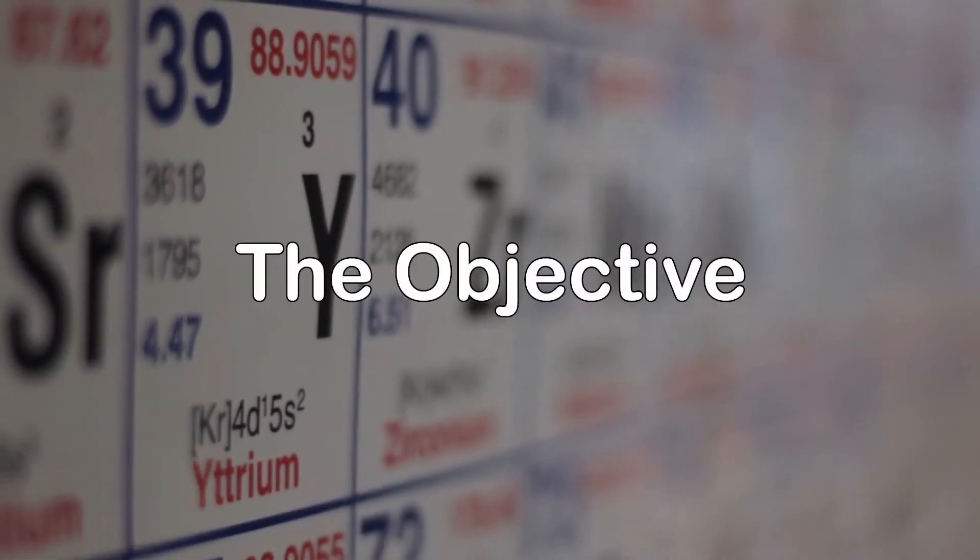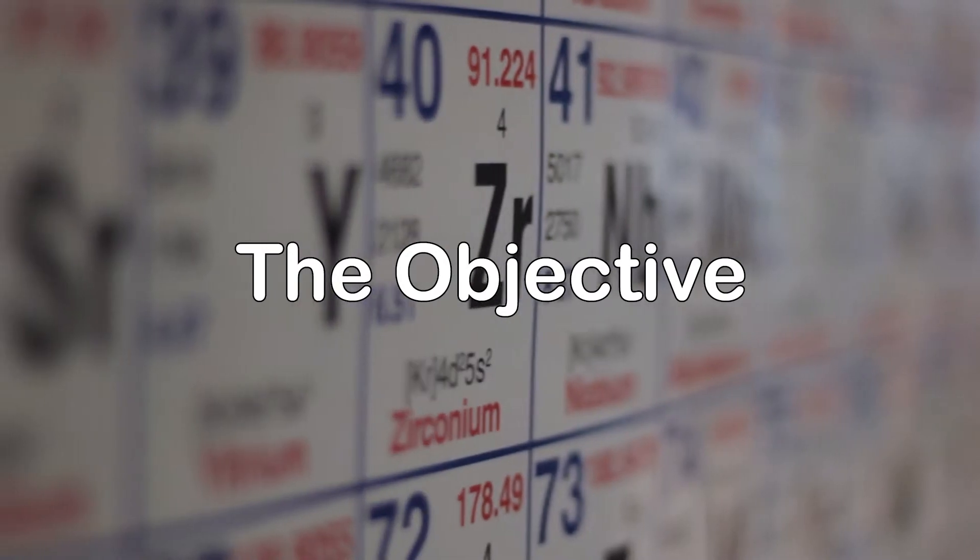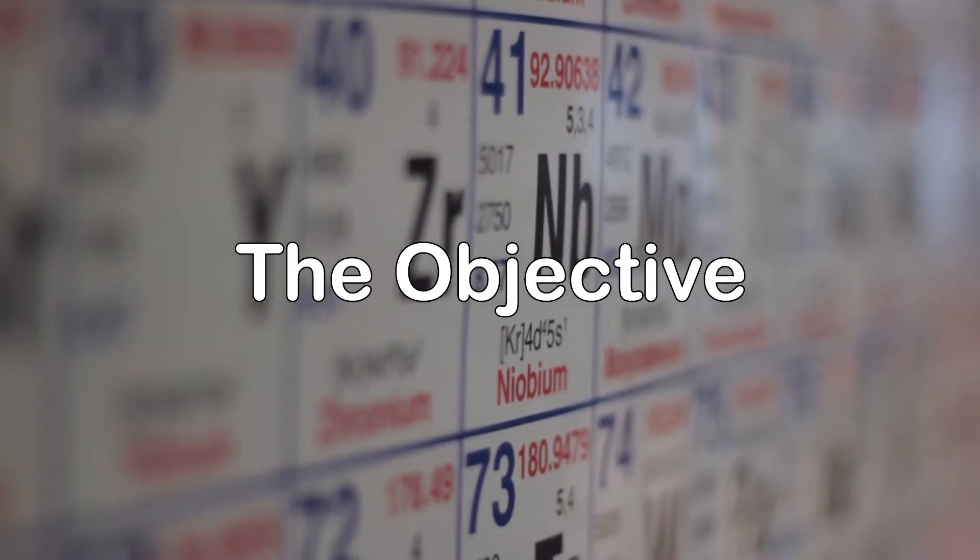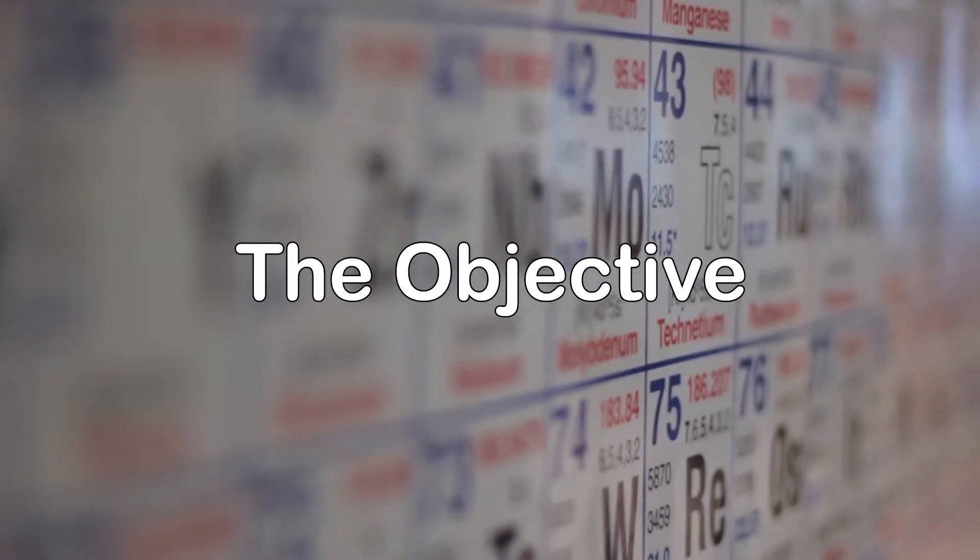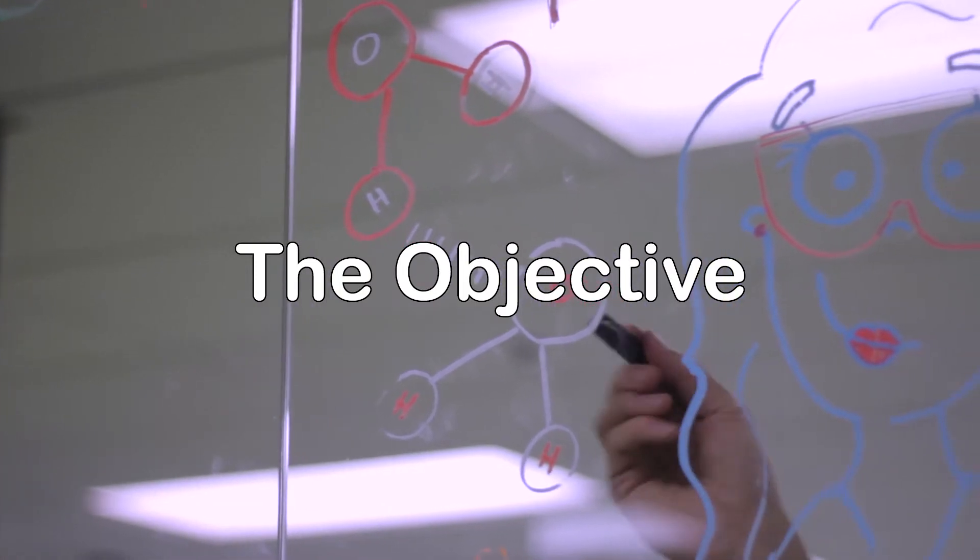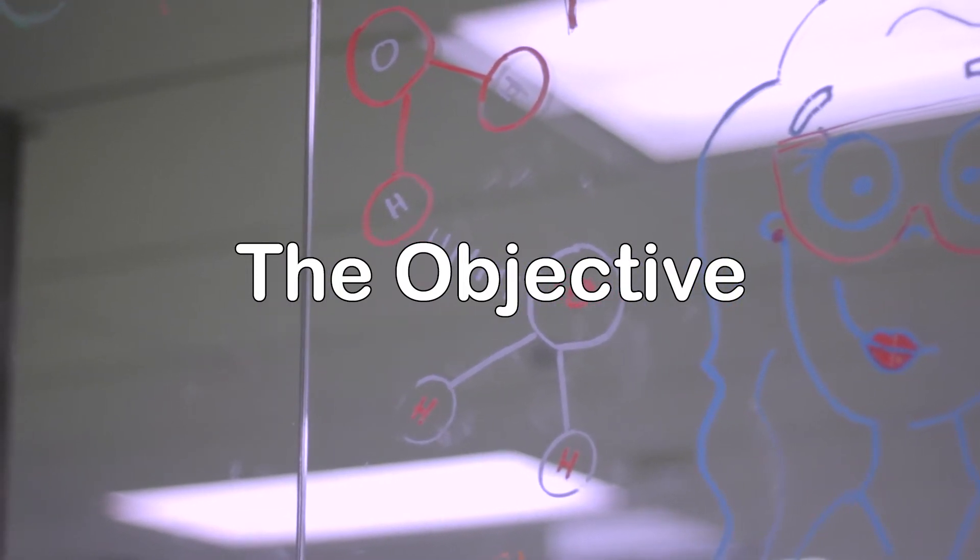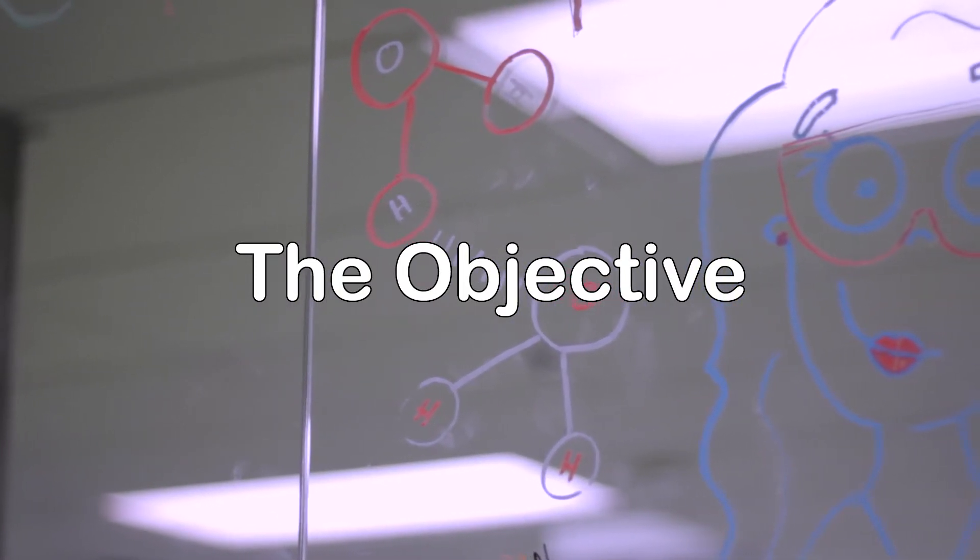Calorimetry. There are two parts to this experiment. In part one, the objective is that the enthalpy of solution of sodium hydroxide is measured. In part two, the enthalpy of neutralization of an aqueous solution of sodium hydroxide by hydrochloric acid is measured.